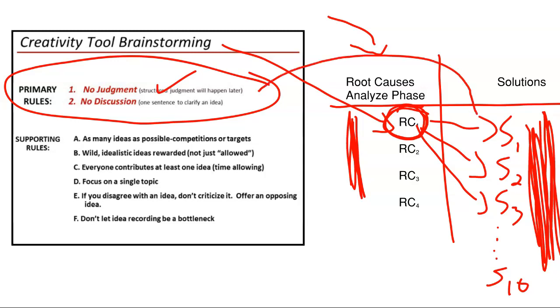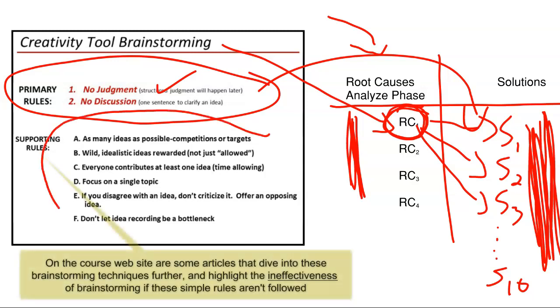We can come up with these outlandish ideas now because in the back half of the improve phase, we'll be vetting those ideas. There are some supporting rules that I think most of you are familiar with, and I've got support articles that walk you through a specific brainstorming session and outline those rules that I think most of us are familiar with.